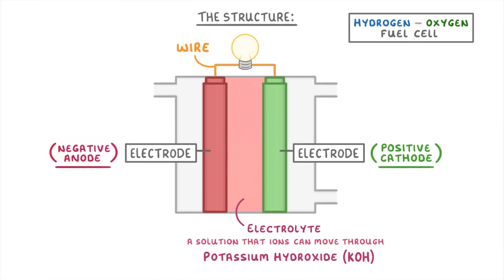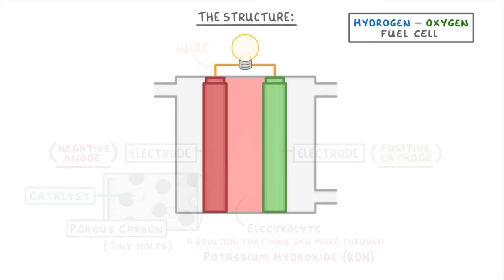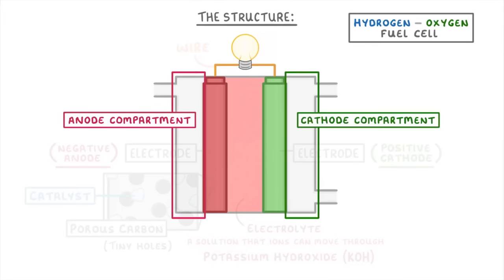In fuel cells, both of the electrodes are made of porous carbon, which means that they have lots of tiny holes, and they also contain a catalyst to speed up the reaction. On the outside of the electrodes, we have the anode compartment and the cathode compartment, and each one has an inlet at the top. On the left, hydrogen will enter the anode compartment, while on the right, oxygen will enter the cathode compartment.